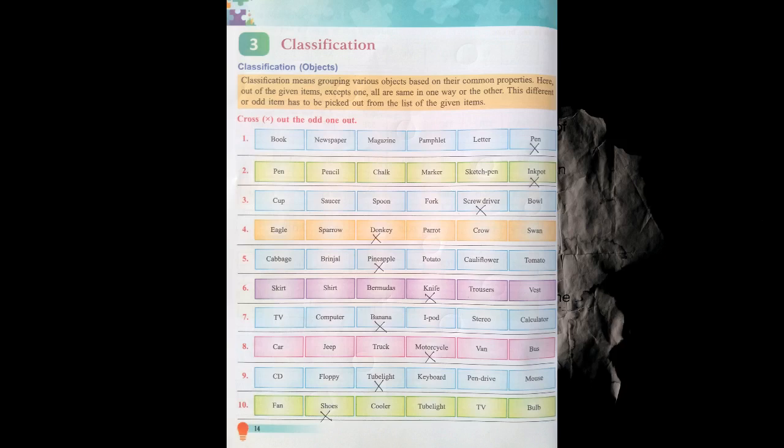Now: cabbage, brinjal, pineapple, potato, cauliflower and tomato. Pineapple is the fruit and all the others are vegetables. Now six: skirt, shirt, bermudas, knife, trousers and vest. All except knife are examples of clothes, so knife is the odd one.